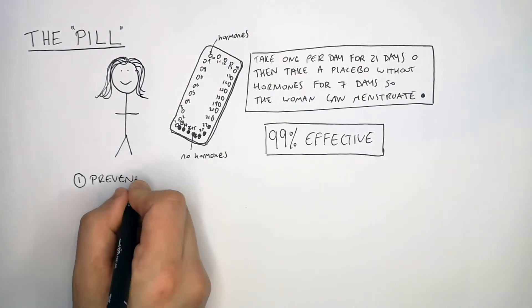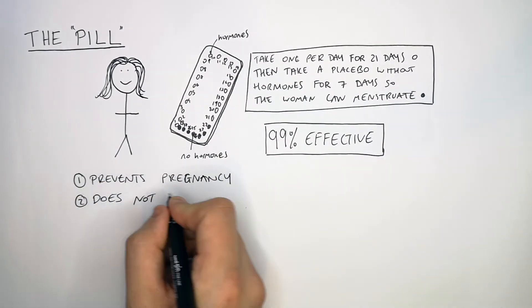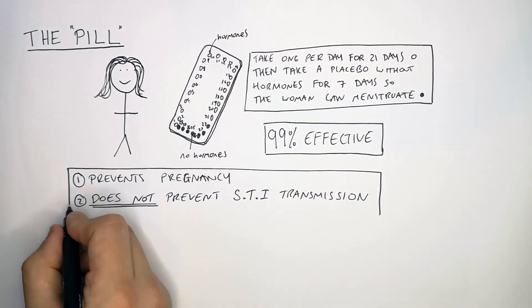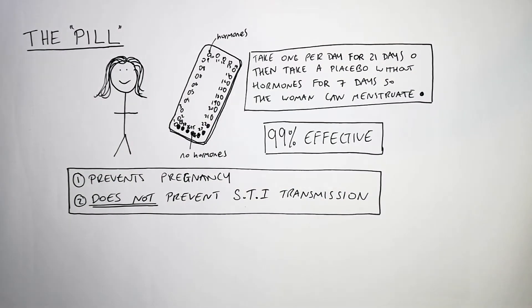The pill will prevent a pregnancy, however it does not prevent sexually transmitted infection transmission. It will not prevent you from getting or transmitting STIs because bodily fluids are still exchanged during sex.